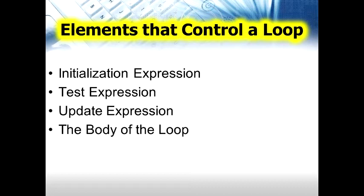The third element is the update expression. The update expression changes the values of loop variables and is executed at the end of the loop after the loop body is executed. The body of the loop contains the statements that are executed repeatedly as long as the test expression is true.